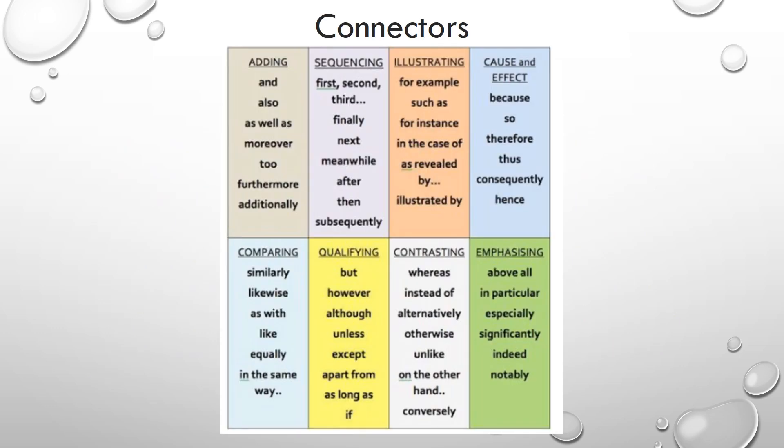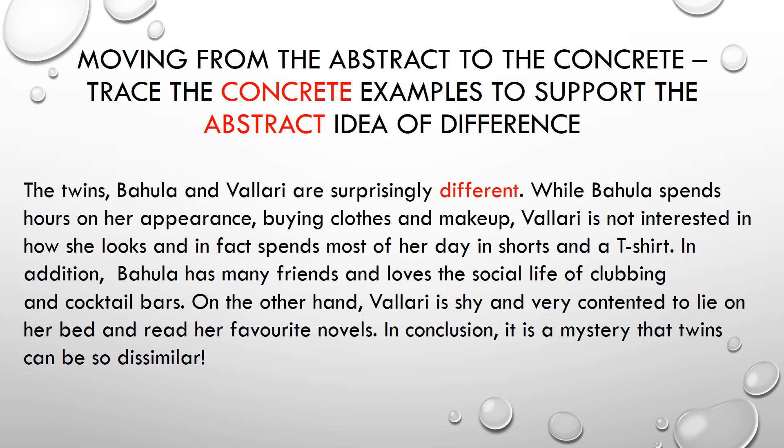Pause the video here to read through some of the connectors that you can use in your writing. Let's look at how this all works in a paragraph. Trace the concrete examples to support the abstract idea of difference that is introduced in the topic sentence, and take note of the connectors that have been used. The twins Behula and Valerie are surprisingly different. While Behula spends hours on her appearance, buying clothes and makeup, Valerie is not interested in how she looks and in fact spends most of her day in shorts and a t-shirt. In addition, Behula has many friends and loves the social life of clubbing and cocktail bars. On the other hand, Valerie is shy and very contented to lie on her bed and read her favourite novels. In conclusion, it is a mystery that twins can be so dissimilar. Take note of the fact that a comma is used after every connector.